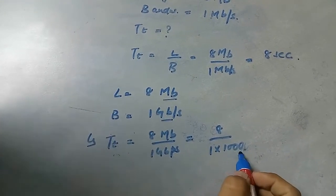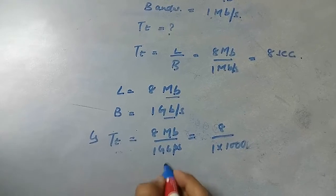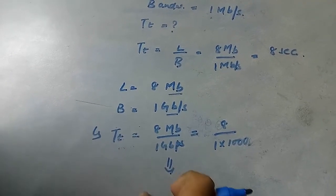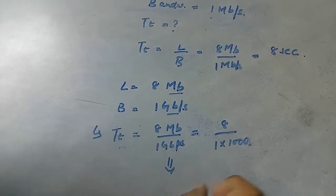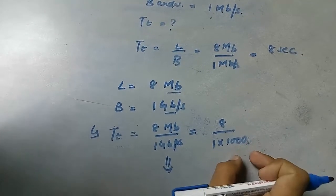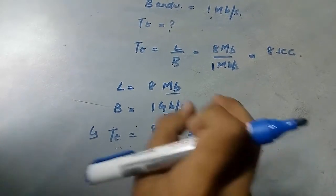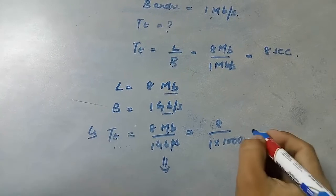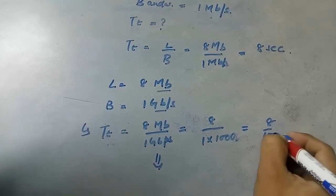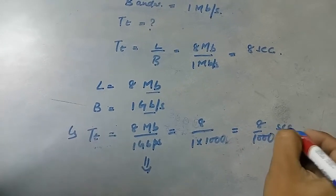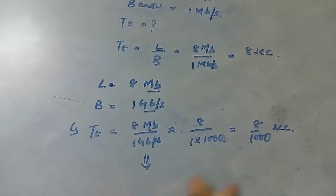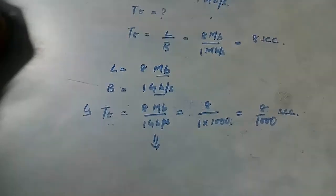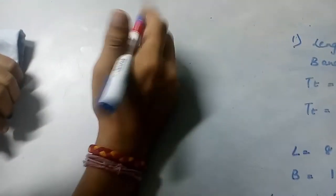Remember, this will not be 1024 because bandwidth is measured in frequency, so it is always in powers of ten, not powers of two. Therefore the answer will be 8 by 1000 seconds.